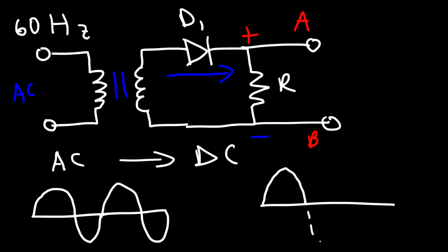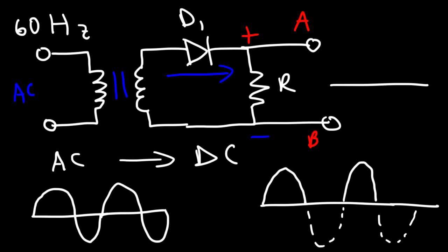The bottom half will be deleted. What we really have is a pulsating DC wave — the output looks something like this. It's a pulsating DC wave, and so that is the half-wave rectifier circuit.